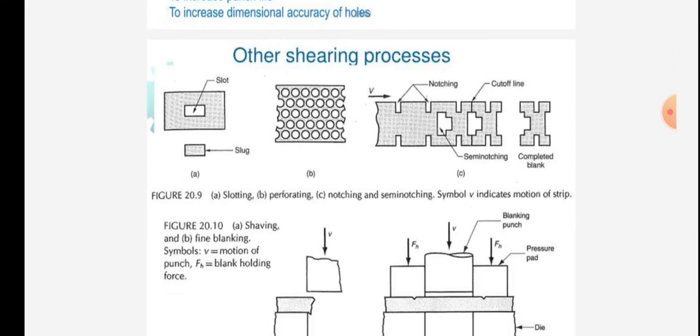Other shearing processes: slotting is given in figure A, perforating is given in figure B, then in figure C notching and semi-notching is given. Symbol V indicates motion of the strip.